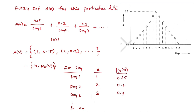The continuous fuzzy set is indicated as A(x) = integral of mu(x)/x. Once again, this integration symbol is not indicating true integration — it is actually indicating the continuous collection for the continuous fuzzy set. We will discuss that in the next slide.